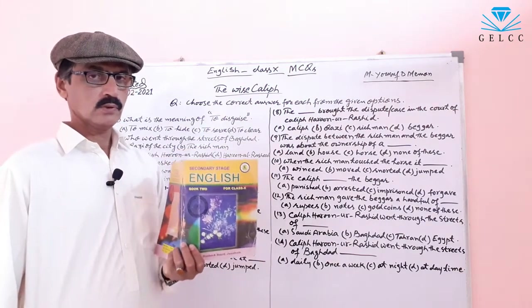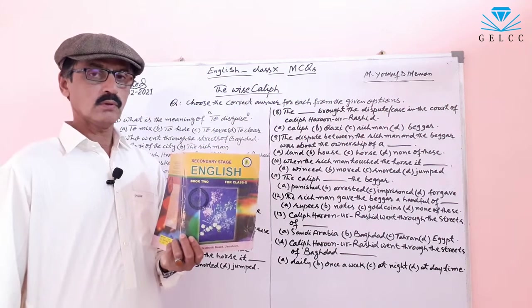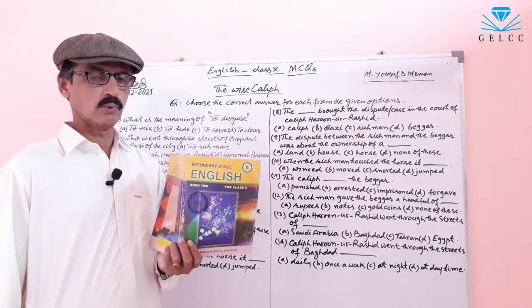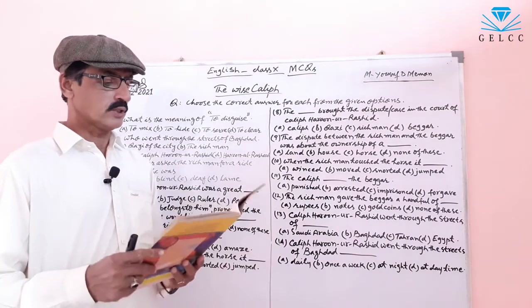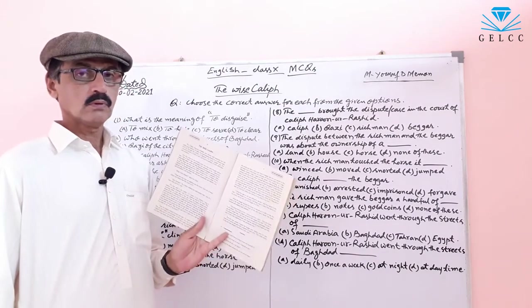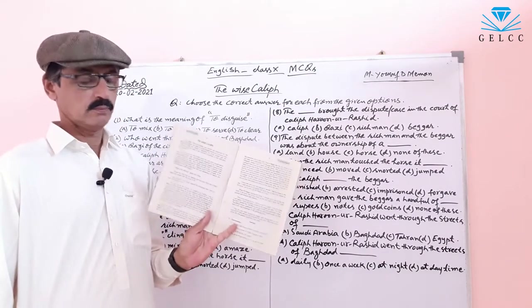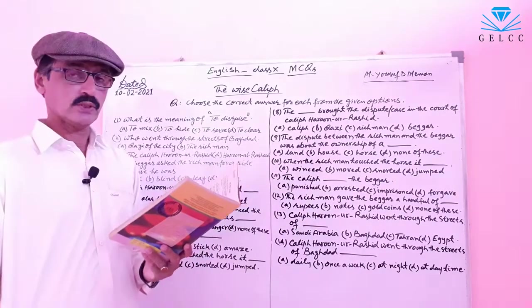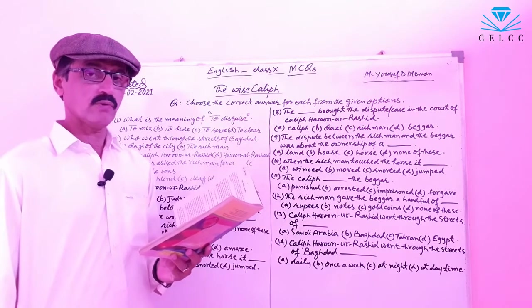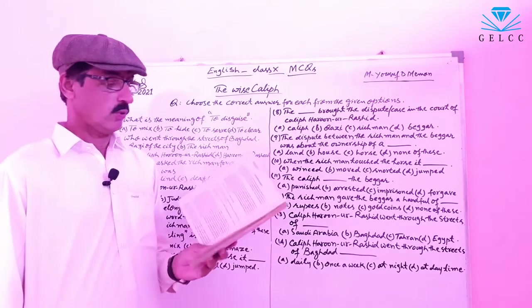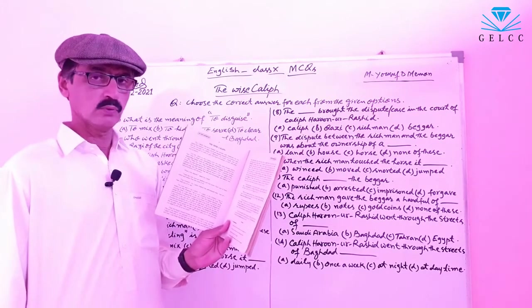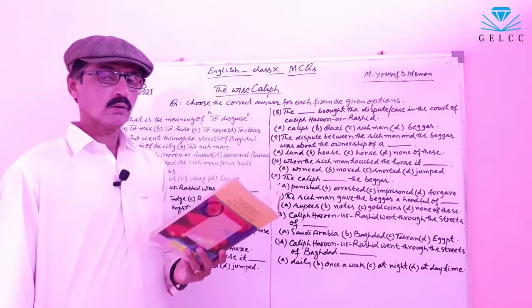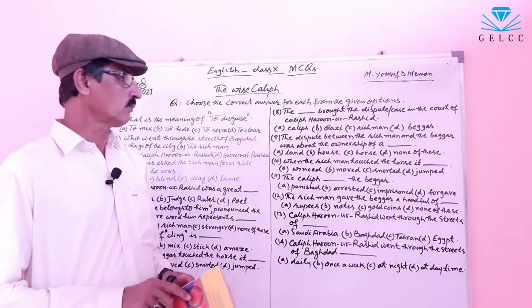Dear students, this is your book of English Class 10 from Sindh Text Book Board. Lesson 2 is 'The Wise Caliph.' It is on page number 2. So please, first of all, read this lesson very carefully. Open your books on page number 2, 'The Wise Caliph.' Here I am going to solve the MCQs.